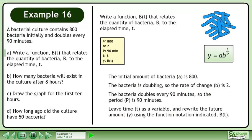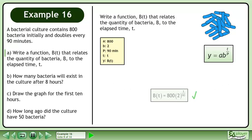Leave time as a variable and rewrite the future amount using the function notation indicated. The function is b equals 800 times 2 raised to the power of t over 90.